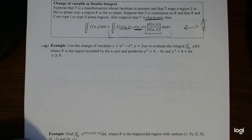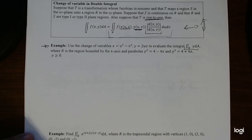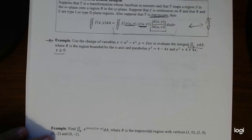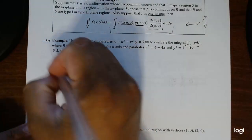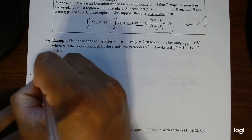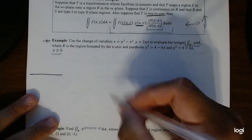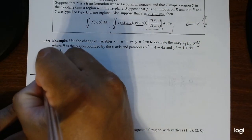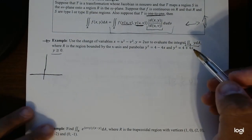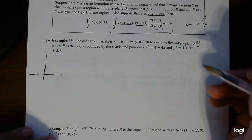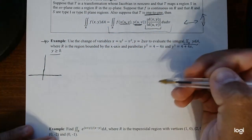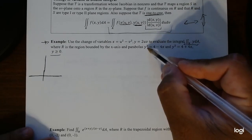This is an alternative for double integration that sometimes makes things easier. Let's try an example: use a change of variables with x equal to u² minus v² and y equal to uv to evaluate the double integral of y dA, where R is the region bounded by the x-axis, the parabola y equals √(4 minus 4x), y² equals 4 plus 4x, and y greater than or equal to zero.